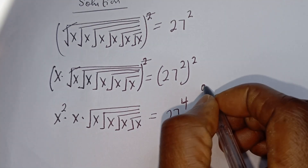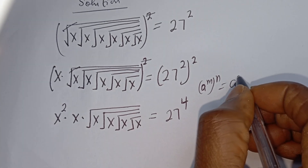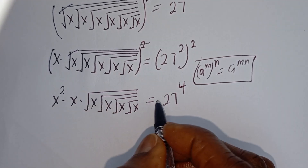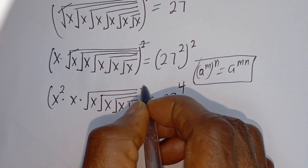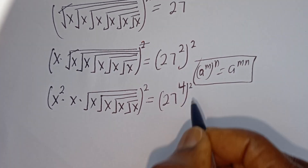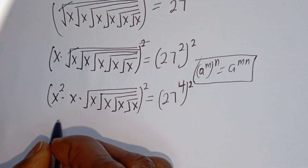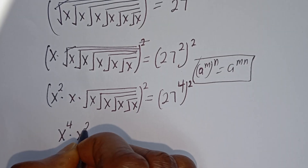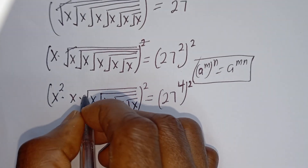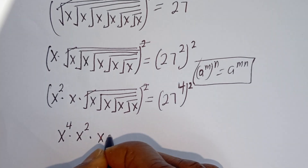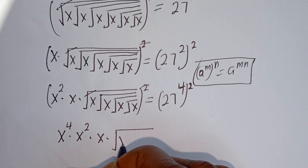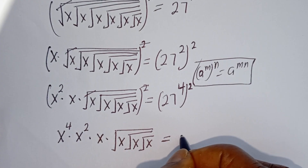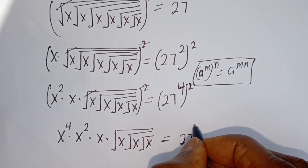Using the rule that a^m to the power of n equals a^(mn), let's square both sides again. This gives s squared multiplied by s, multiplied by square root of s, square root of s, square root of s, equals 27 to the power of 4. Squaring again: s to the power of 4, times s squared, times s, times square root of s, square root of s, equals 27 to the power of 8.